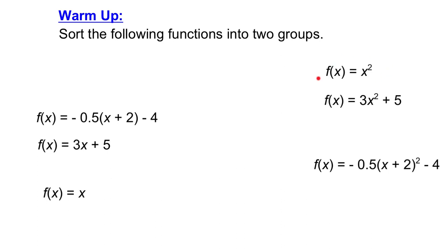In the second group, this is the simplest function. All the other functions in that group have numbers just added to that simplest version. Here we have x, 3x plus 5 — we added in some more numbers. We added in a negative 0.5, a plus 2, a minus 4. And the basic building block is the same for all these functions. Over here, x squared is the simplest function, and we just keep adding terms and coefficients to get more complex functions. But they're built on the same basic building block.